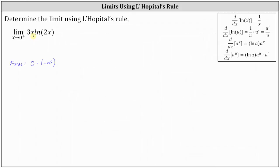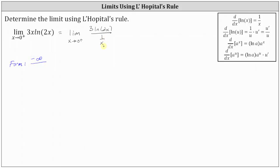Notice here we're multiplying by x. Multiplying by x is equivalent to dividing by the reciprocal, or dividing by 1 over x, which means the given limit is equal to the limit as x approaches 0 from the right of 3 natural log 2x divided by 1 over x. We often use this property in the opposite direction, where dividing by 1 over x is equivalent to multiplying by x. Now, as x approaches 0 from the right, 3 natural log 2x approaches negative infinity and 1 divided by x approaches positive infinity — so now we do have one of the indeterminate forms in which we can apply L'Hôpital's rule.